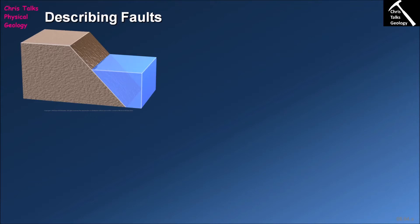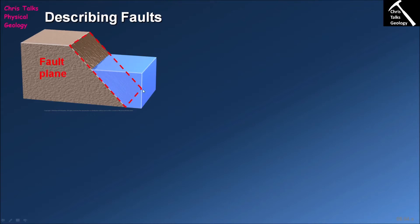When we're thinking about faults the first thing we have to do is be able to describe our faults. We can see in this model here we have a fracture surface, and along this fracture surface we have two blocks of rock which are moving relative to each other. The blue block on the right has dropped down relative to the grey block on the left, so we know this fracture surface would be classified as a fault. The fracture surface itself is referred to as the fault plane — the surface along which the movement is occurring.